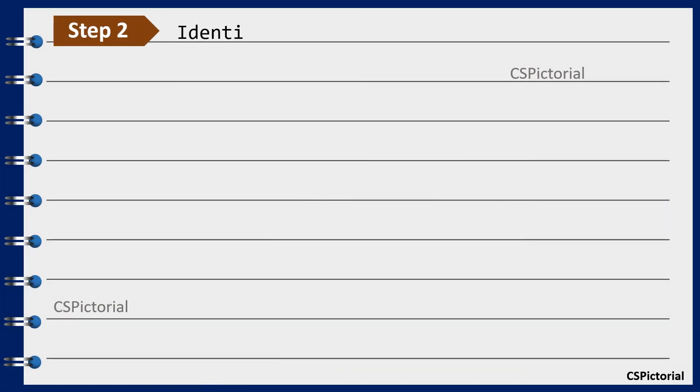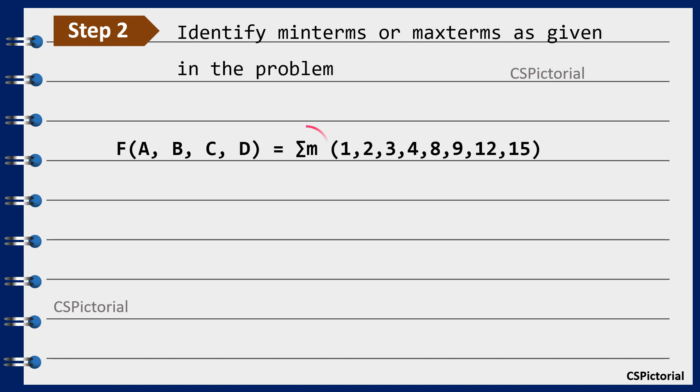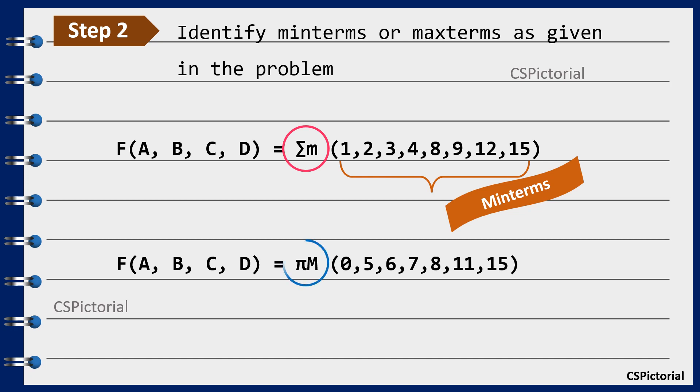Then identify whether the given Boolean function denotes min terms or max terms. If the Boolean function is represented as sigma m, that is summation of small m, it means the Boolean function is for sum of products and it denotes min terms. Whereas if the Boolean function is represented as pi m, it means the terms in the Boolean function are max terms for POS form.